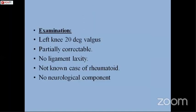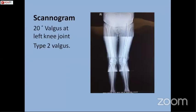On examination, this was a valgus deformity of 22 degrees, which was partially correctable. There was no ligament laxity. He is not a known case of rheumatoid arthritis, and a neurological component was also excluded by examination. This is a scanogram: the tibiofemoral angle is up to 20 degrees, and this was partially correctable.